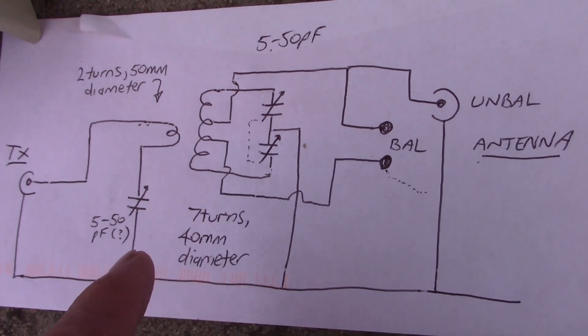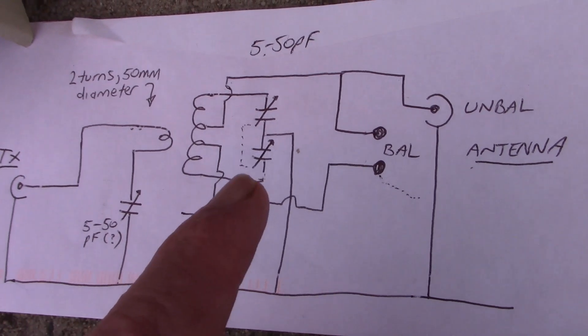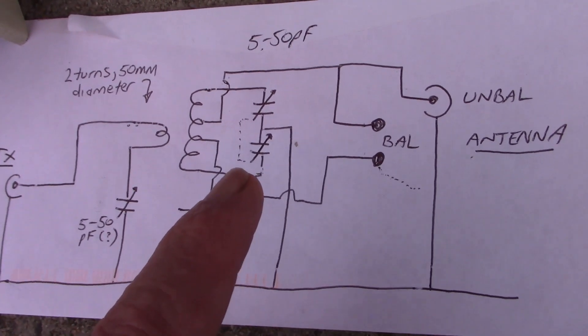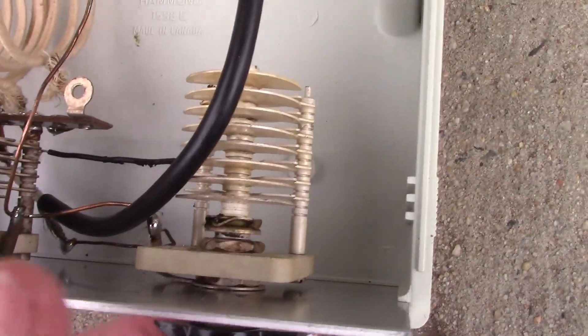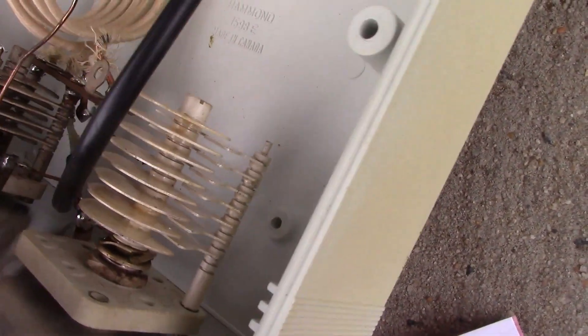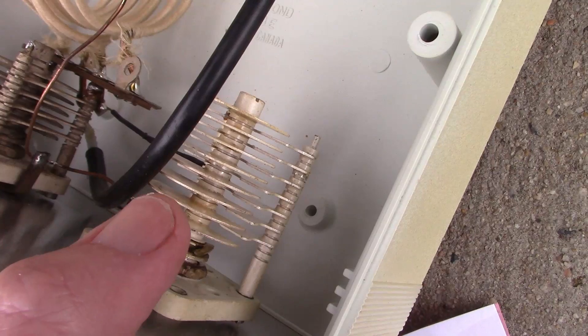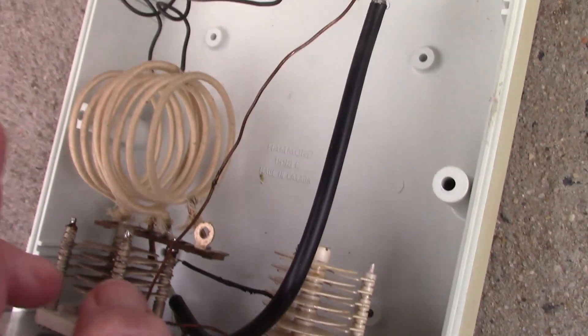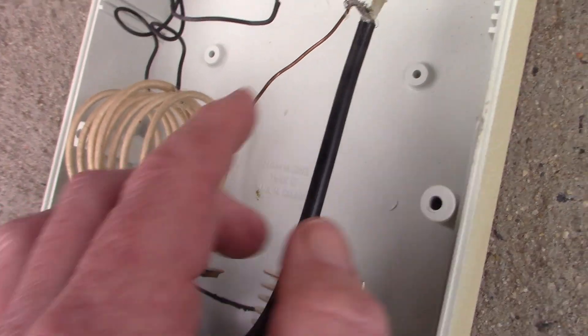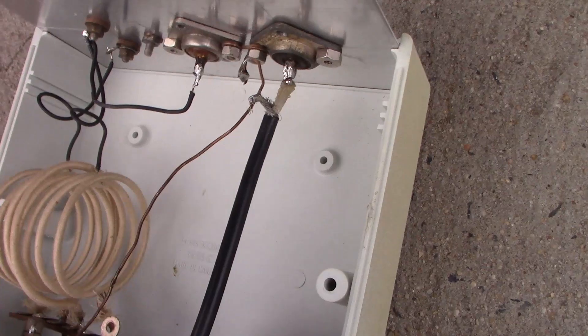It uses two variable capacitors. This one here is just an ordinary type, this one is a dual gang, it happens to be in a butterfly configuration. I'll just show you the difference here. This one here is what I'd call the input variable capacitor that connects in series with the primary coil, which is where the RF comes from from the transmitter end.